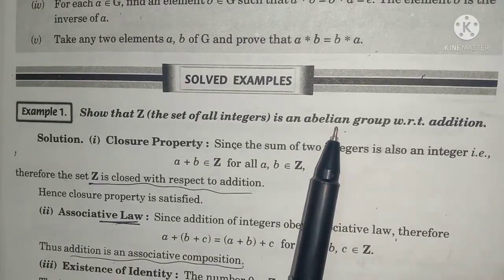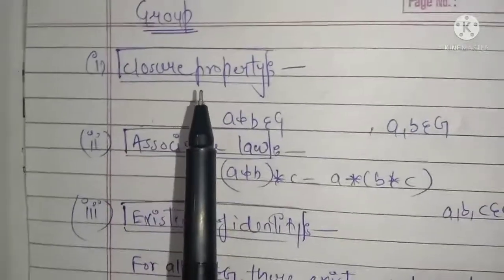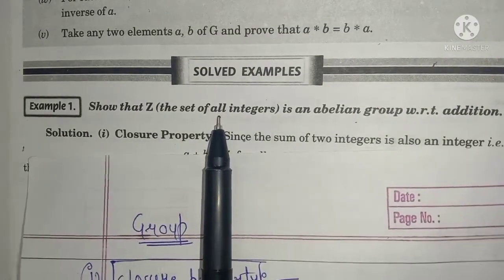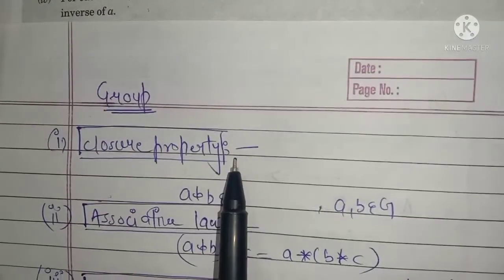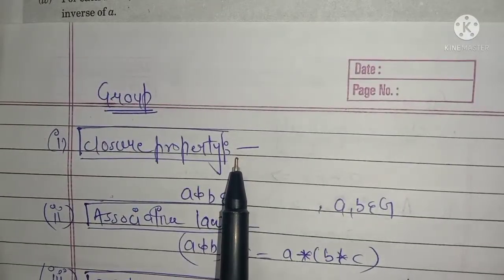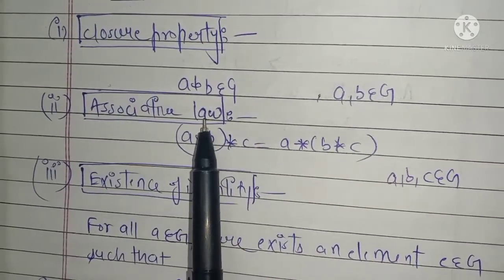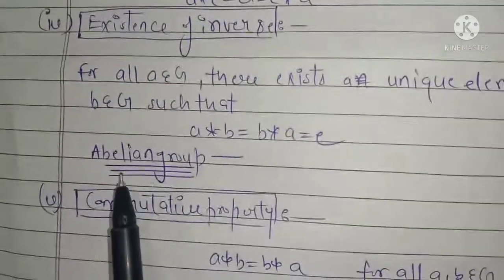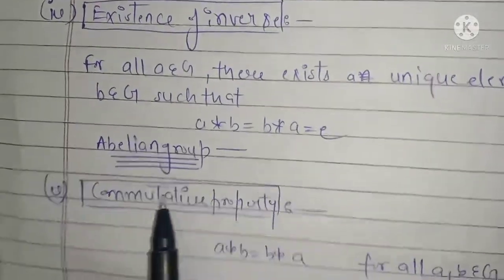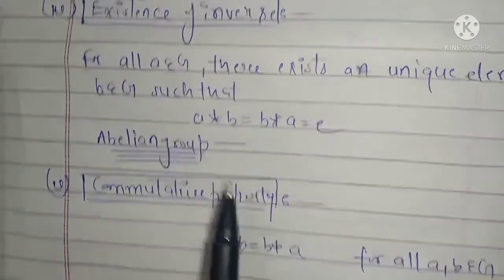Let's take a revision here. We will recall that for a set with a binary operation, when it comes to 4 properties: first is the closure property, second is the associative law, third is existence of identity, and fourth is existence of inverse. And if you ask about the Abelian group, then in the 4 properties, with an extra 5th property, which is called commutative property.